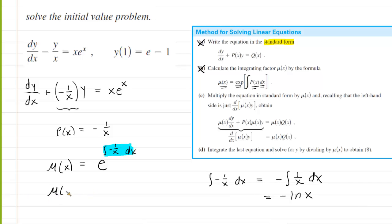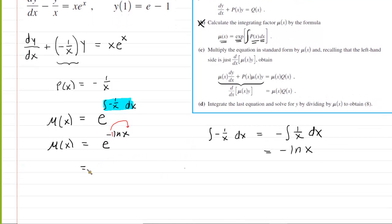The integrating factor mu of x is equal to e raised to the negative ln of x. We utilize properties of logarithms to simplify this. We can rewrite this as e raised to the ln of x to the negative 1. Basically the negative 1 moves into the exponent position of x. What's convenient about that is that we have inverse functions canceling. The exponential function and the natural log function cancel out. This shows us that mu of x is equal to x to the negative 1, which is the same as 1 over x. So there it is, our integrating factor.